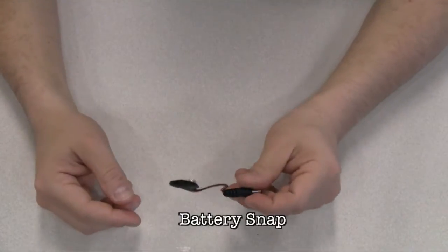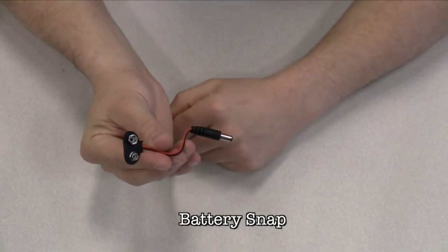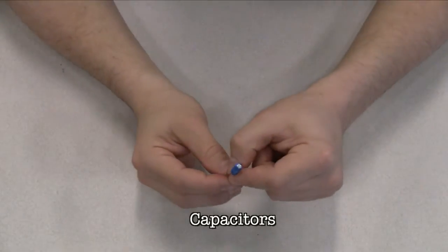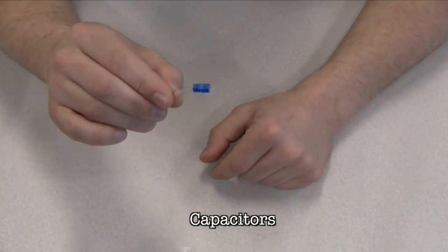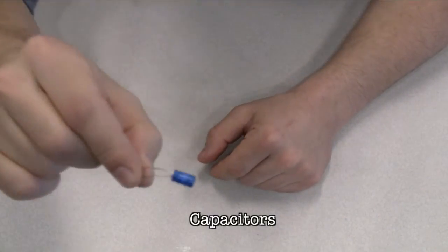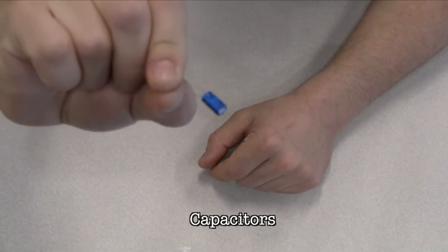A battery snap is used to connect a 9-volt battery to power leads that can be easily plugged into a breadboard or your Arduino. Next, we have capacitors, and these components store and release electrical energy in a circuit. When the circuit's voltage is higher than what is stored in the capacitor, it allows current to flow in, giving the capacitor a charge.